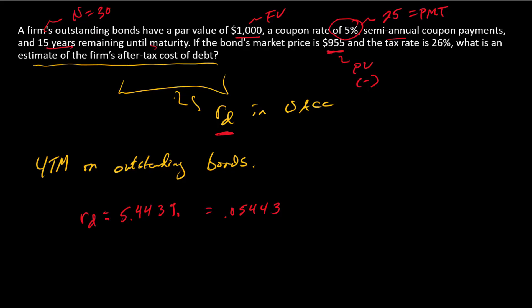Okay, but we're asked for after-tax cost of debt. And so we know that in the WACC formula, we multiply RD times 1 minus the tax rate. That's the after-tax cost of debt.